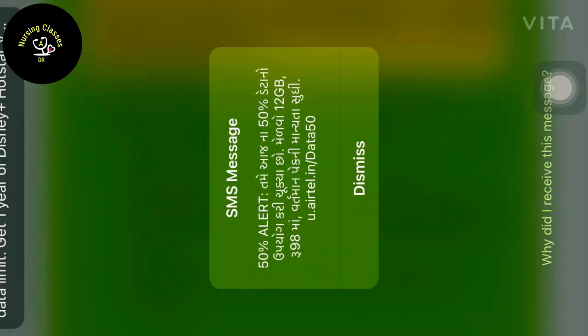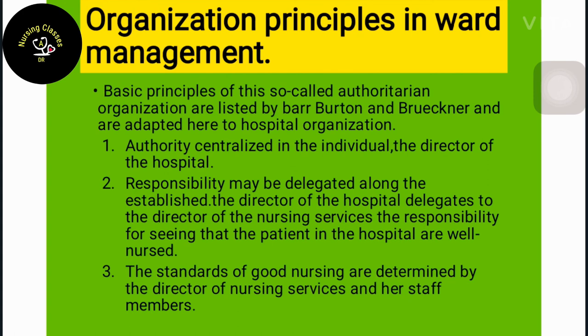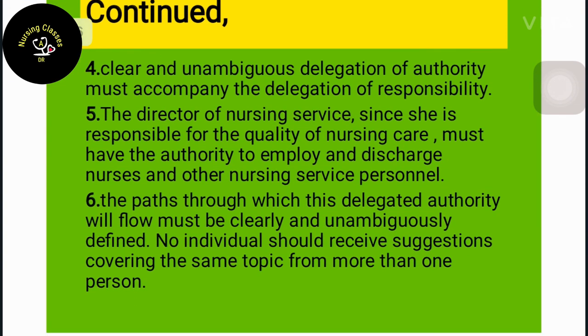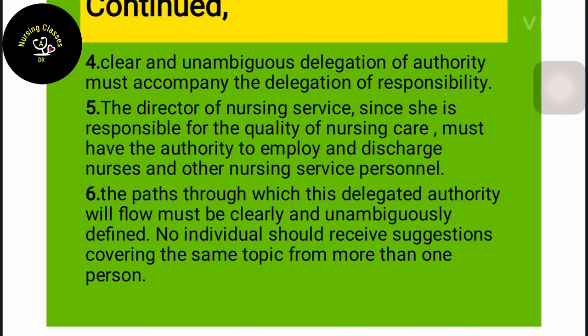The basic principles of organization, adapted for hospital organization, are as follows: authority is centralized in the individual — the director of the hospital. Responsibility may be directed along established lines; the director of nursing services holds responsibility for seeing that patients in the hospital are cared for by nurses. Standards of good nursing are determined by the director of nursing services and health staff. Authority must be accompanied by responsibility; the director of nursing services must have authority to employ and discharge nurses and other nursing service personnel.